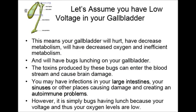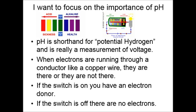Let's assume you have a problem with your gallbladder — let's assume you have low voltage in your gallbladder. This means your gallbladder will hurt, your metabolism will decrease, you'll have decreased oxygen and insufficient metabolism, and you will also have bugs feeding on your gallbladder, causing you pain. The toxins produced by these bugs can enter the bloodstream and cause brain damage. It's not just affecting your gallbladder; it's getting into the rest of your body too. You may have infections in your large intestines, sinuses, or other places causing damage and creating an autoimmune problem. It's simply bugs having lunch because your voltage is too low and your oxygen level is low. So I want to focus back on the importance of pH.